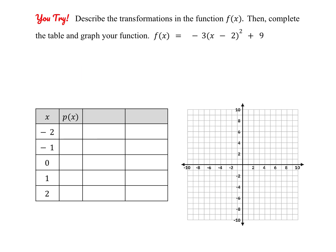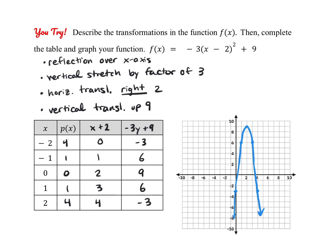Alright, now I'm going to ask you to pause the video and give this one a try on your own. Go ahead and check your work here. So we have three vertical transformations: a reflection over the x-axis, a vertical stretch by a factor of 3, and a vertical translation up 9 — giving us negative 3y plus 9. And then one horizontal transformation: a horizontal translation to the right 2, so I add 2 to my parent function coordinates. Here are my transformed coordinates, giving a downward-facing parabola.